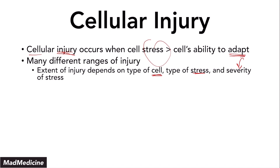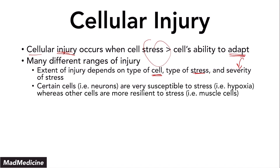When it comes to our cells, certain cells like your neurons and your cardiac cells are way more susceptible to stress, meaning they are more likely to die off faster when put under a certain amount of stress — I would call these weaker cells. Whereas you have other cells, like your muscle cells, that are more resilient and able to handle more — I'm going to call these stronger cells.